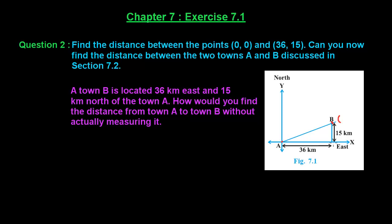The distance on the x-axis is 36 kilometers, so the x-coordinate of this point will be 36. The distance on the y-axis is 15 kilometers, so the y-coordinate will be 15. Therefore, the coordinates of point B are (36, 15).